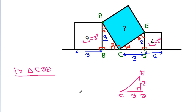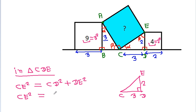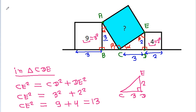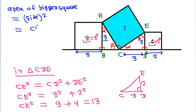This angle is 90 degrees, so by the Pythagorean theorem, CE squared equals CD squared plus DE squared. CE squared equals 3 squared plus 2 squared, which equals 9 plus 4, that is 13. So the area of the bigger square equals side squared, which is CE squared, and that is 13.